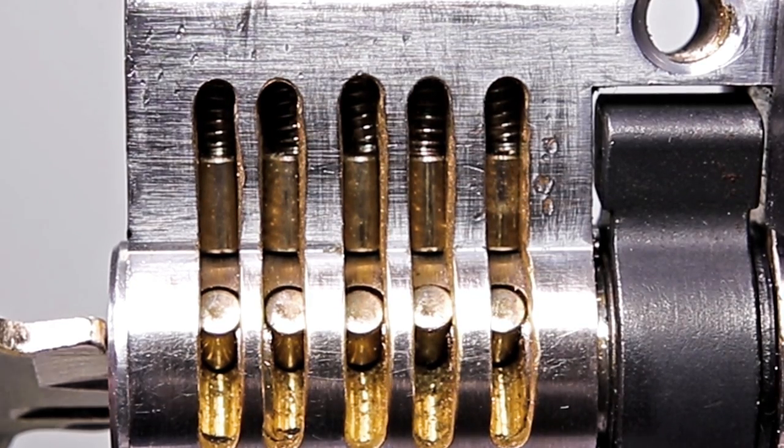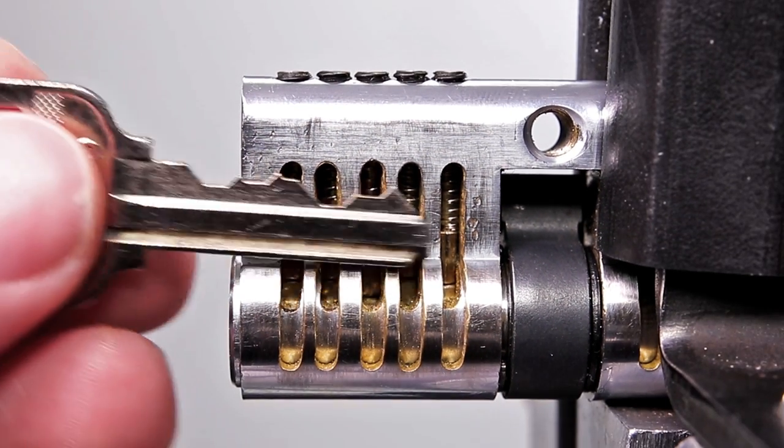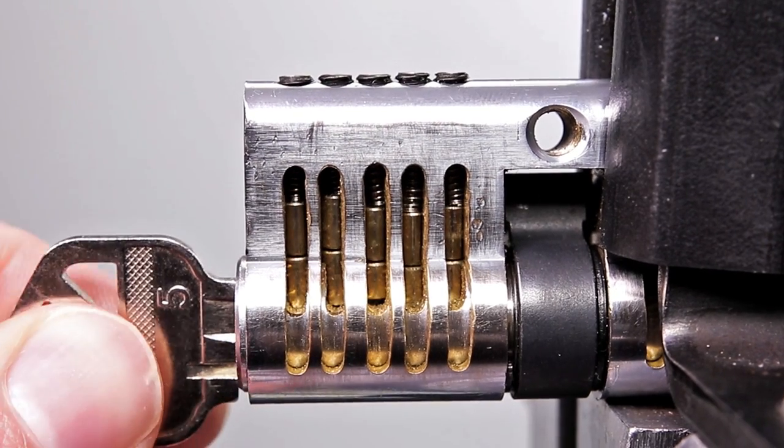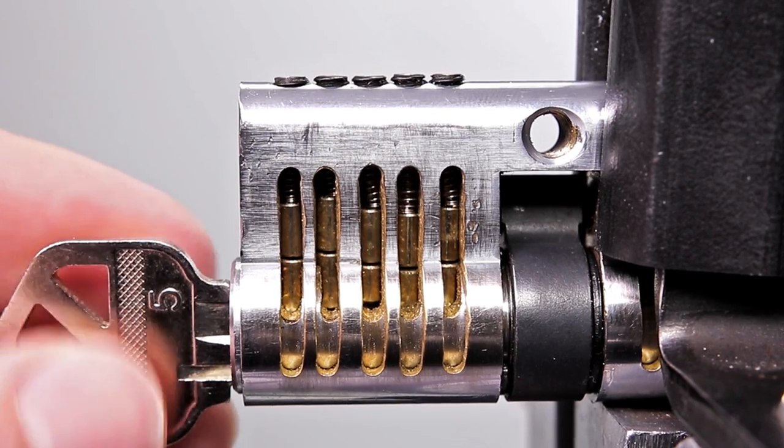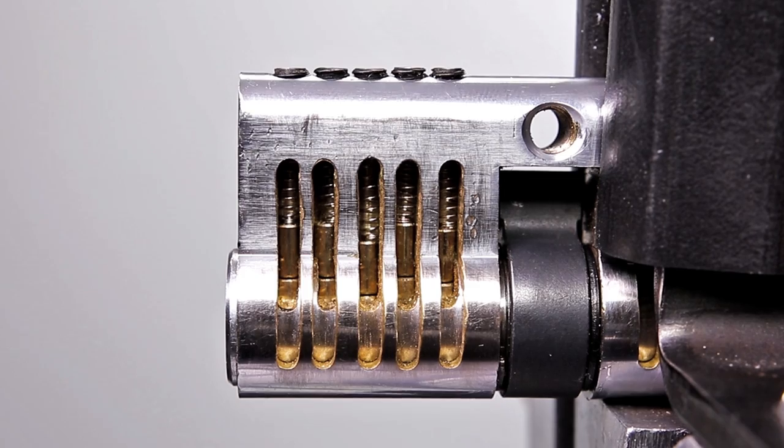So what happens when you insert the wrong key? When you insert the incorrect key, it is not going to lift all of the key pins up to the correct height and the shear line will not be reached. You can see all pins are at random heights and they are sitting obstructing the plug, and you're not going to be able to get the lock opened up.